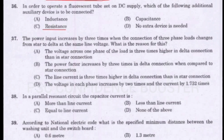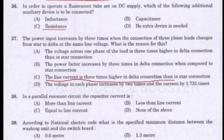Question number 37. The power input increases by three times when the connection of three-phase loads changes from star to delta at the same line voltage. What is the reason for this? Option A - The voltage across one phase of the load is three times higher in delta connection than in star connection. Option B - The power factor increases by three times in delta connection compared to star connection. Option C - The line current is three times higher in delta connection than in star connection. Option D - The voltage in each phase increases by two times and the current by 1.732 times. Answer is Option C: The line current is three times higher in delta connection than in star connection.